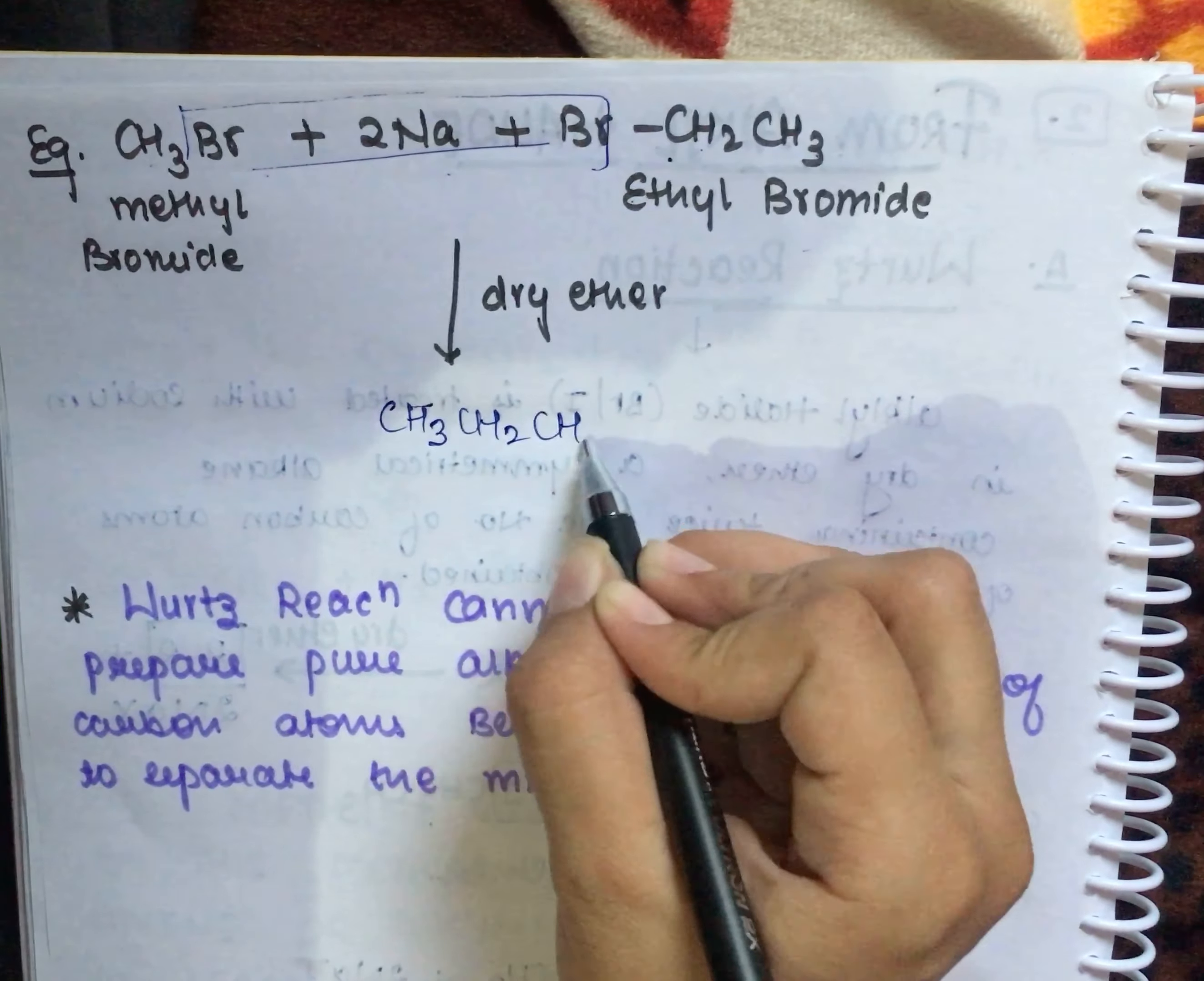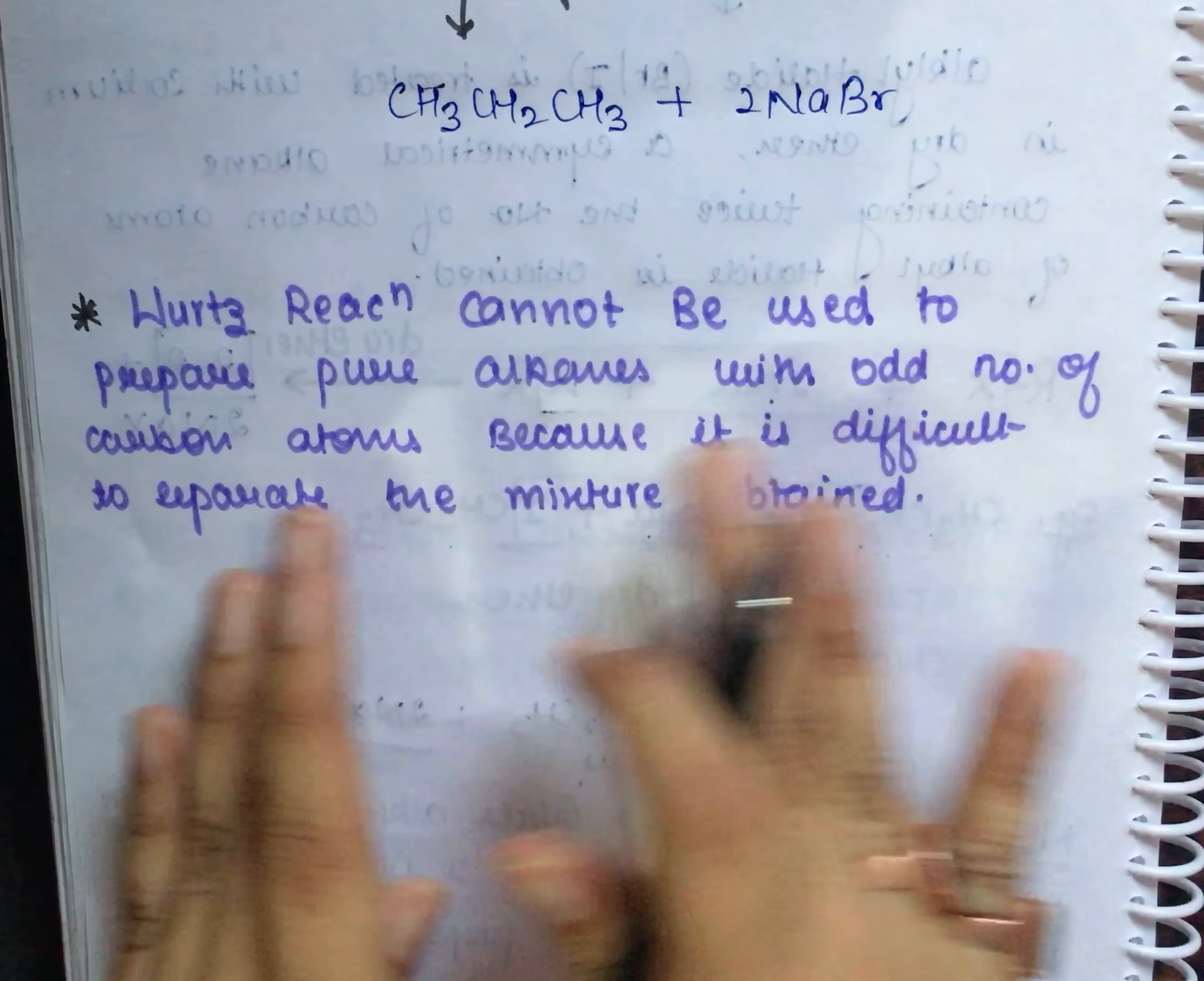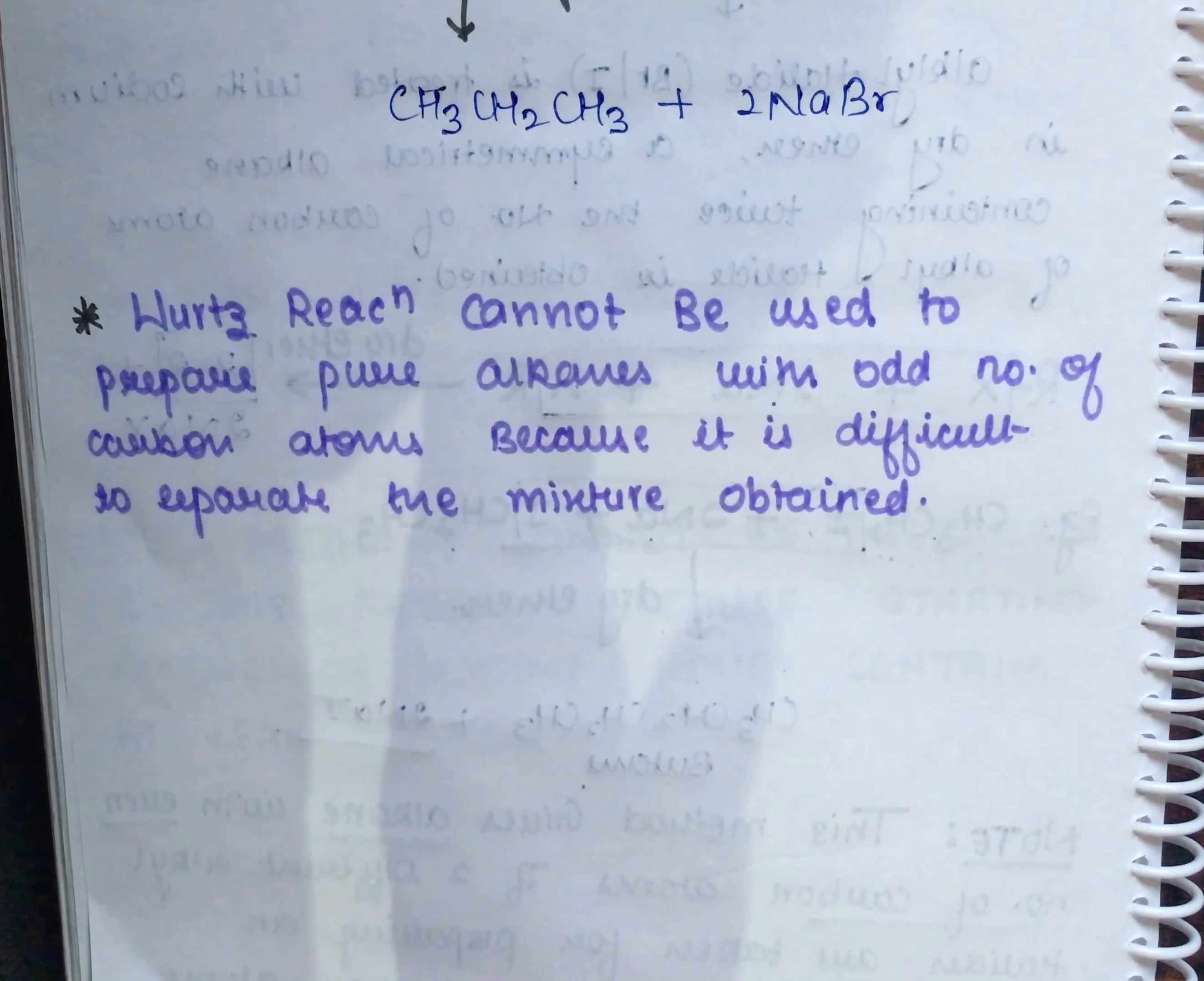CH3CH2CH3 plus 2NaBr. The Wurtz reaction cannot be used to prepare pure alkanes with an odd number of carbon atoms because it is difficult to separate the mixture obtained.